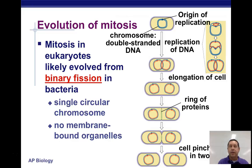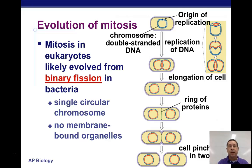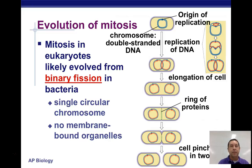Bacteria have a single circular chromosome. For binary fission to happen, it copies the chromosome through a process called rolling circle replication. Once there are two copies of the chromosome — with no nucleus to deal with — the cell elongates, a ring of protein forms between the two new chromosomes, the cell pinches in two, and now we have two identical copies of the original cell.